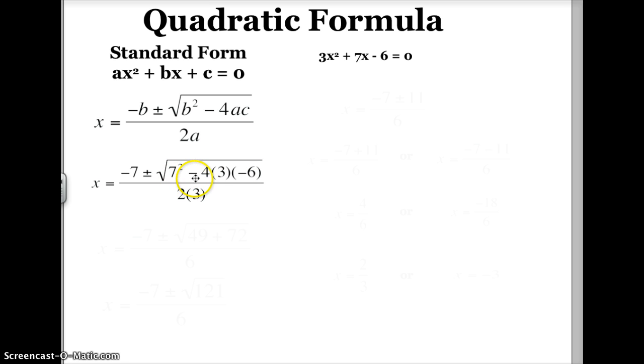If I take -4 times 3 times -6, the -7 stays the same, plus or minus stays the same, the 7² becomes 49, and I'm going to get plus 72.